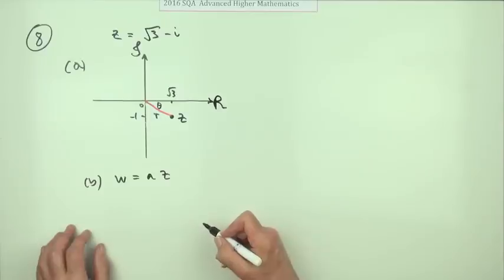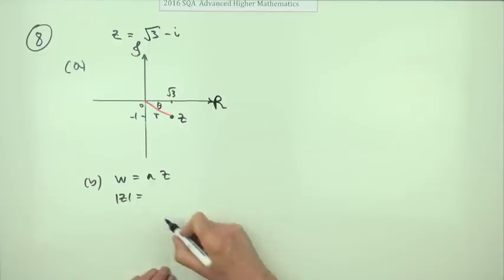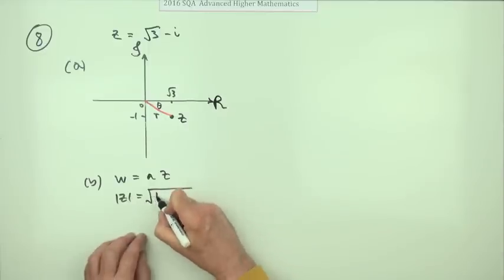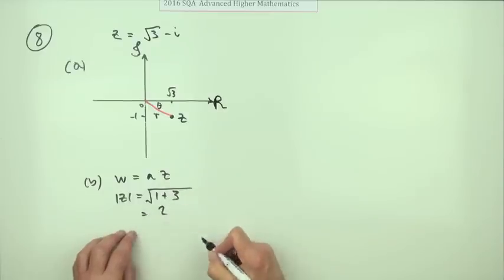But for three marks, maybe you'd have to go through the rigmarole. So we'll say the modulus. That would be the square root of one plus, just taking those parts. It should have been three plus one. I'm just looking at there, which is two, which you know.